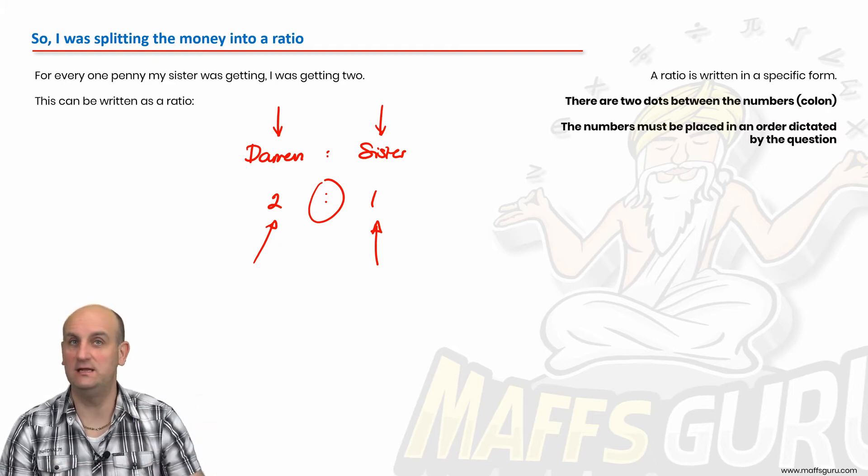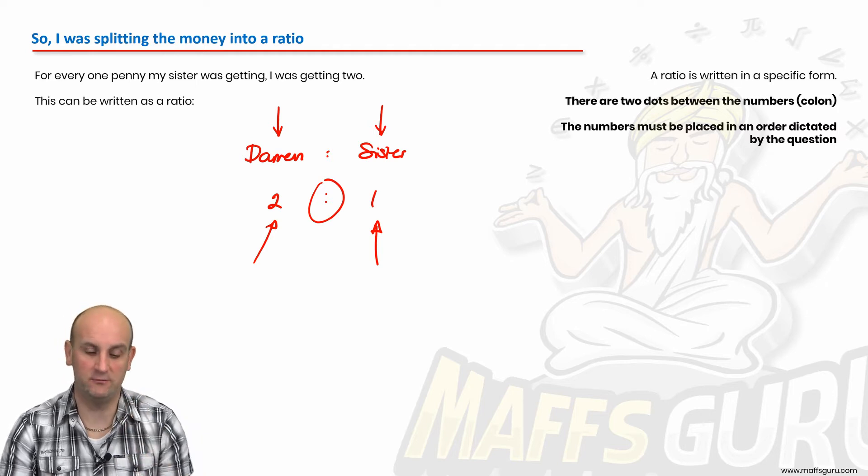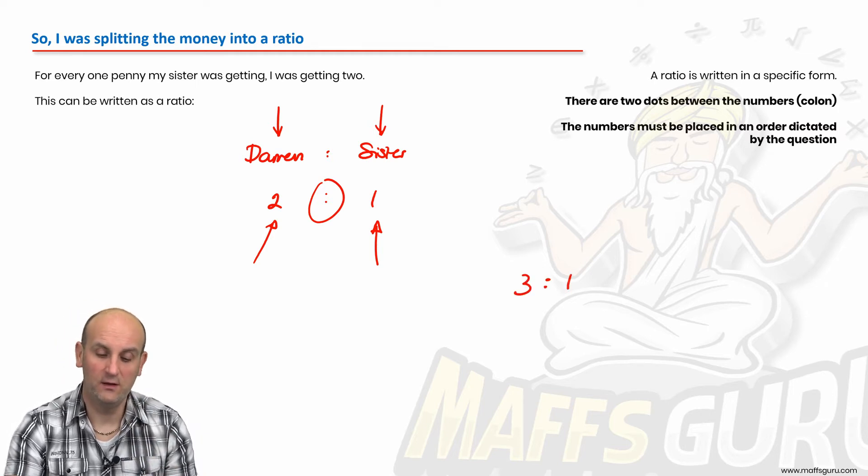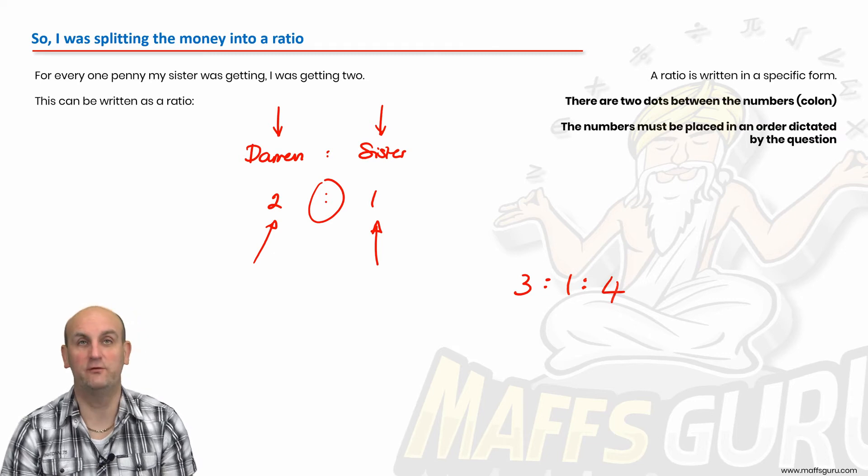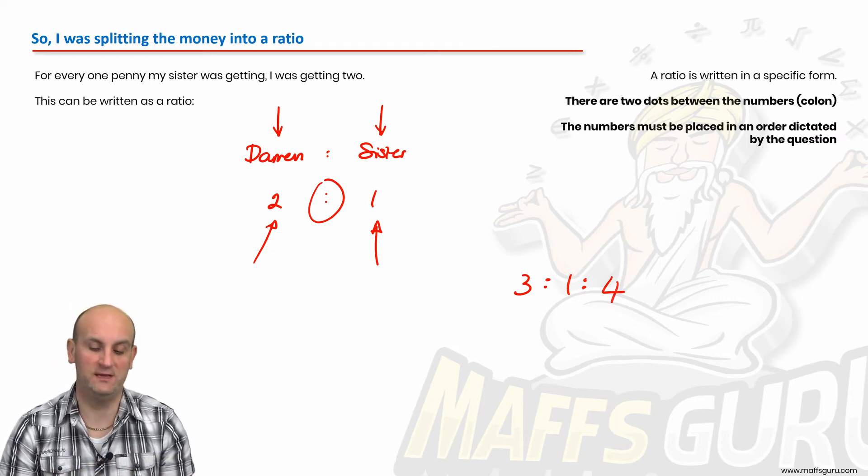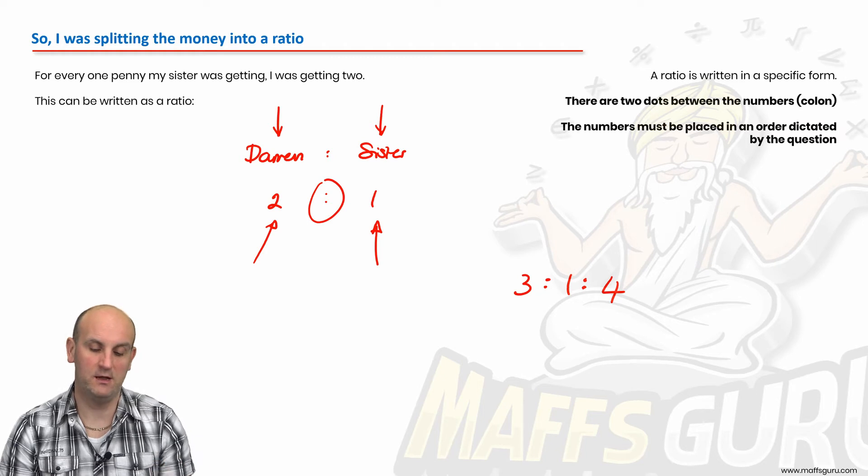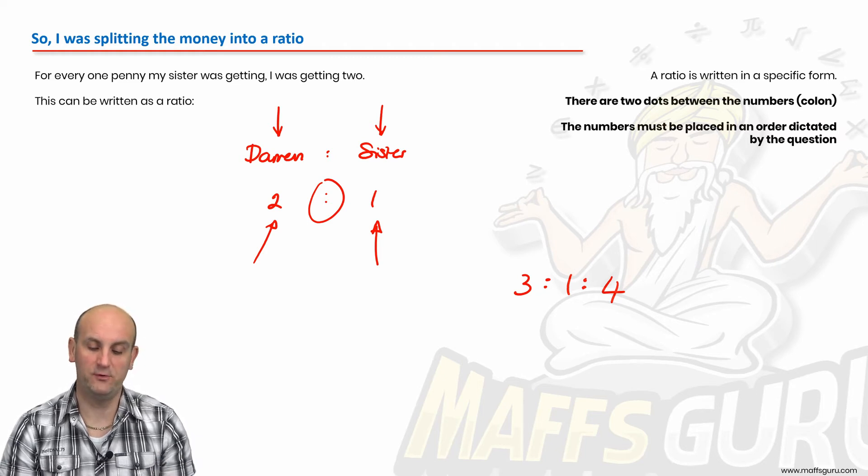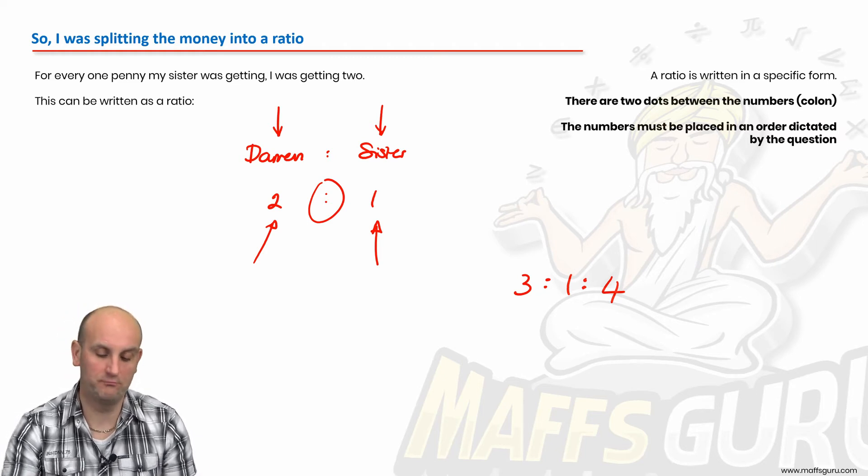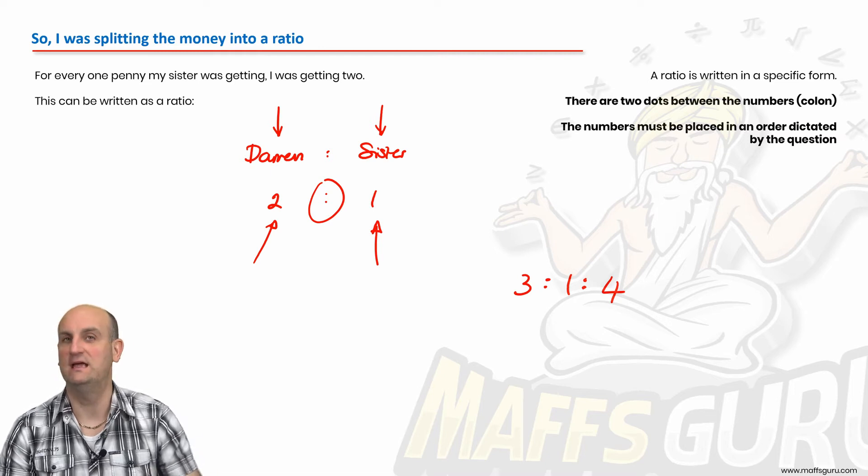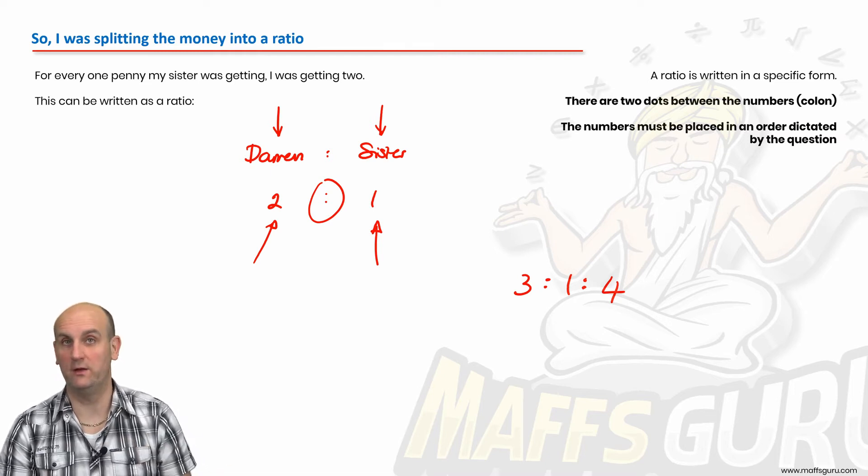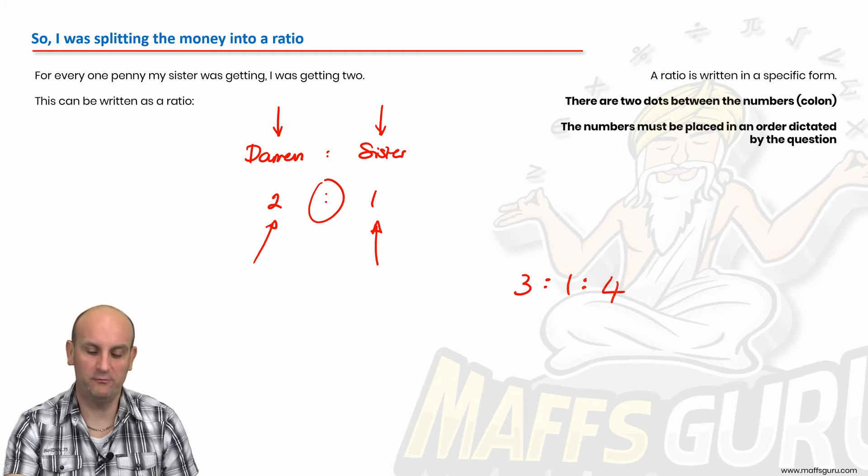Interestingly, you don't have to have just two numbers in a ratio. You can have lots of numbers in ratios. 3:1:4. This could be for example the number of people in a classroom who've got blonde, red, and brown hair. Very small classroom, by the way. But that could also be a ratio.